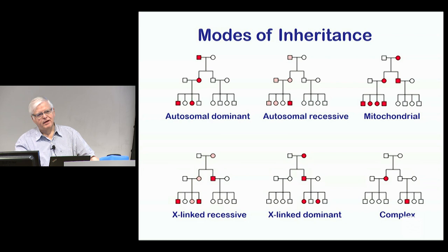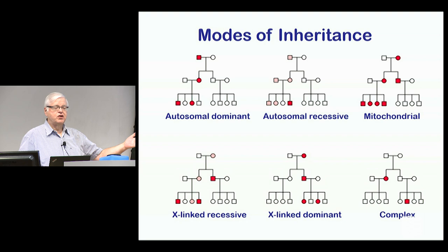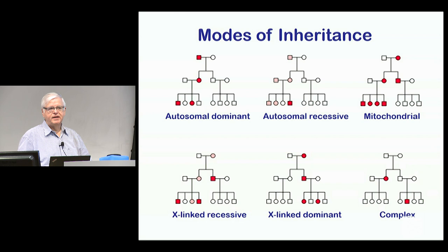There are other patterns of inheritance: mitochondrial, always going down through the maternal line; X-linked recessive, which is just a version of recessive where because the X is often matched up with a Y and the genes don't match between X and Y, you can get the disorder with one copy — so males tend to show X-linked recessives. You can also get X-linked dominant diseases.